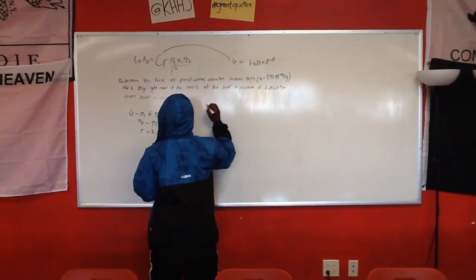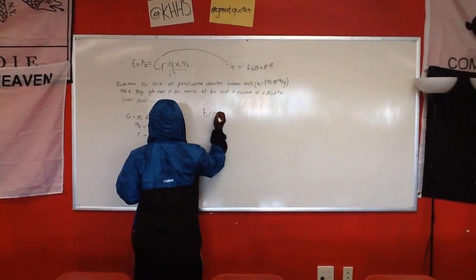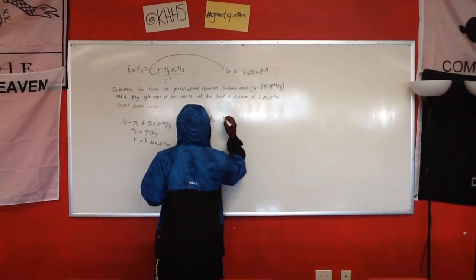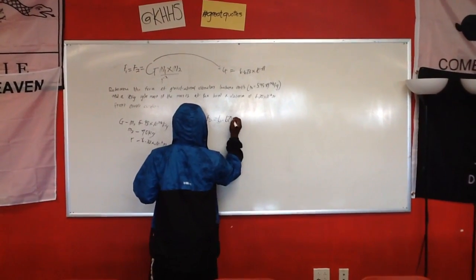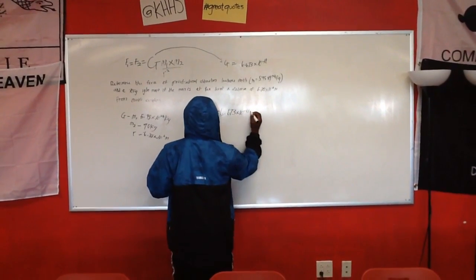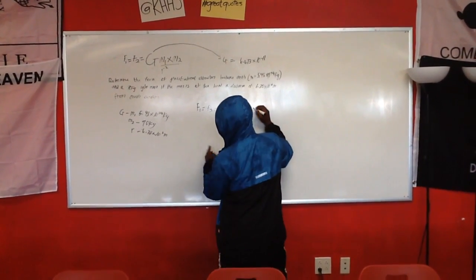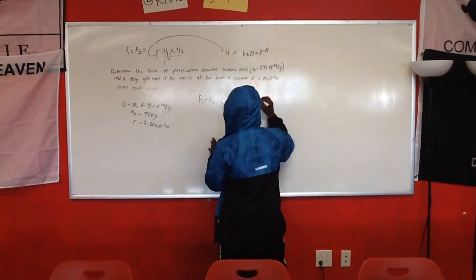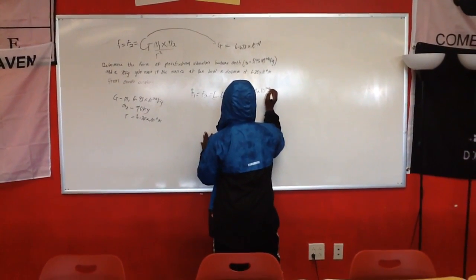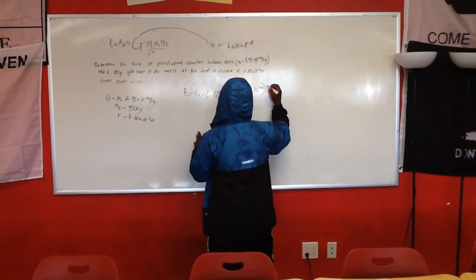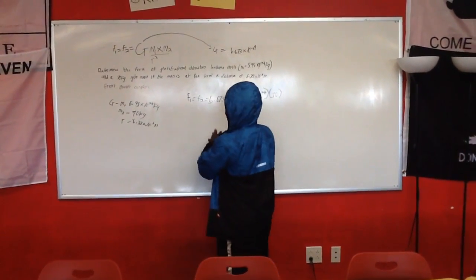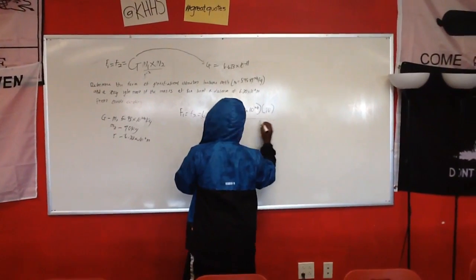So we just plug and chug. F equals 6.673 times 10 to negative 11, that's G, times mass 1, 5.98 times 10 to 24, times mass 2, 70, all over r squared.